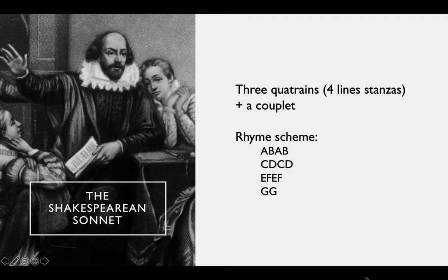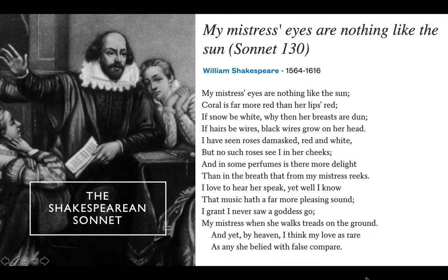The Shakespearean sonnet is the more popular, well-known kind today. It's three quatrains — four-line stanzas — and then a couplet, a rhyming couplet at the end to kind of clinch it all shut. So the rhyme scheme is ABAB CDCD EFEF GG right at the end.